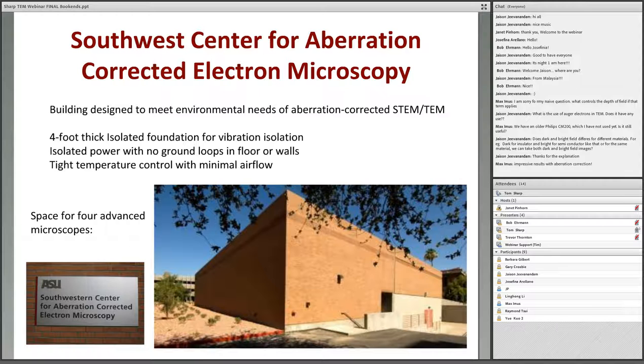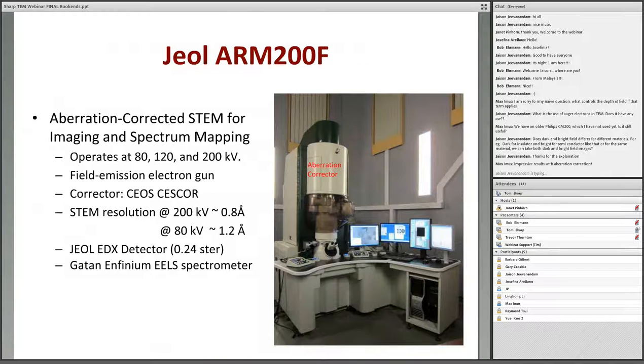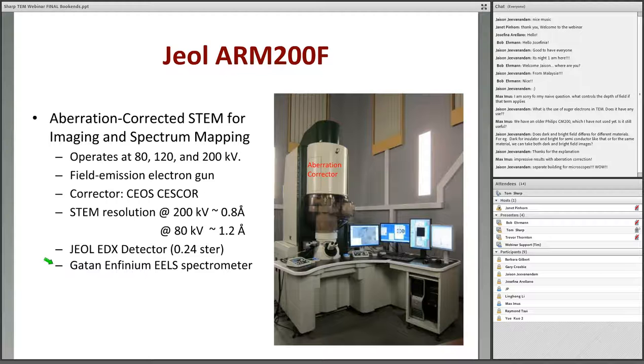We have invested in aberration-corrected microscopy here at ASU. Back in 2010, we were awarded funding from National Science Foundation to get a couple of aberration-corrected instruments. We needed a special building to put them in. We built an annex to an existing building. This building is called the Southwest Center for Aberration-Corrected Electron Microscopy. Here we have this very special building with four bays for advanced microscopes. The first of these is the JEOL ARM-200F.